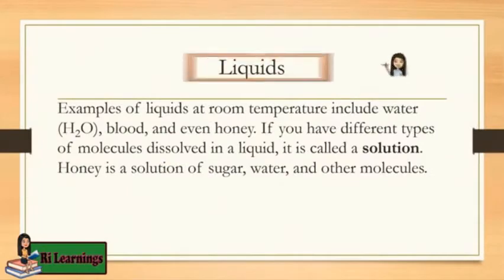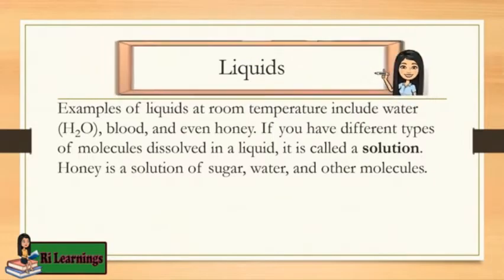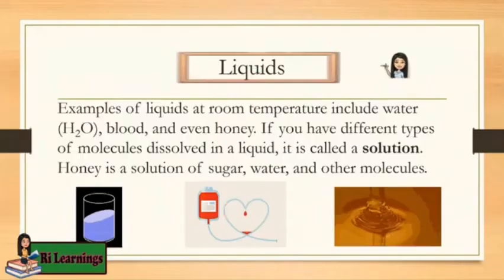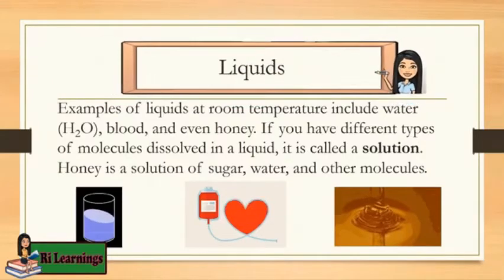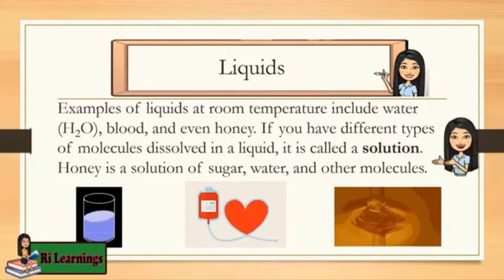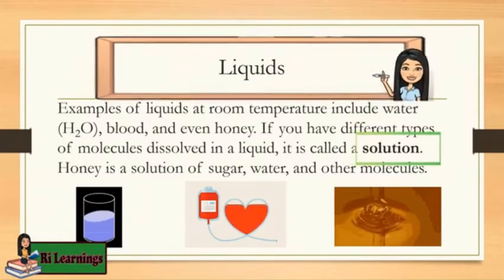Now let's go to liquid. Examples of liquids at room temperature include water or H2O, blood, and even honey. If you have different types of molecules dissolved in a liquid, it is called a solution. Honey is a solution of sugar, water, and other molecules.